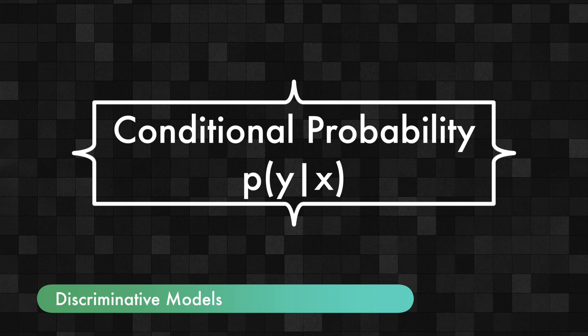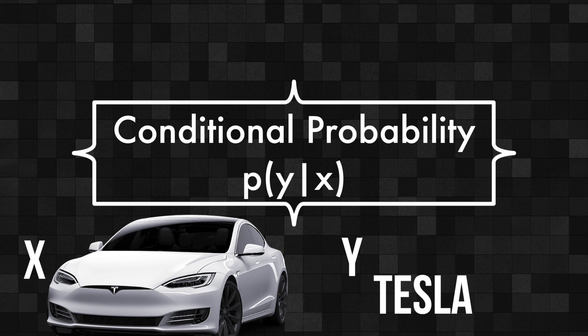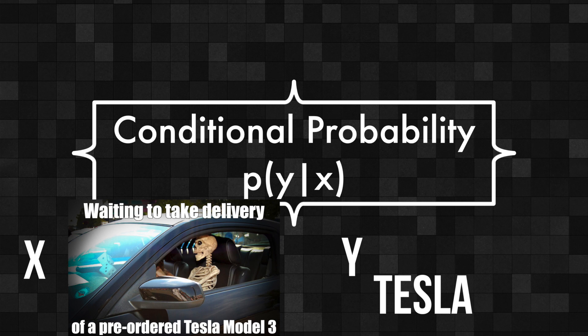Put more formally, most of the advances in machine learning have been in discriminative models, where we try to estimate a function called the posterior probability — that is, the probability of y given x, where x is an input sample and y is an output. So we can imagine x to be an image and y to be the kind of object in the image, like a Tesla. It tells us how much the model believes there is a Tesla given an input image, compared to all possibilities it knows about.